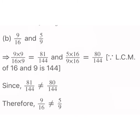The common denominator for both fractions is 144. We multiply 9 upon 16 by 9 to get 81 upon 144. We multiply 5 upon 9 by 16 to get 80 upon 144. Since 81 upon 144 is not equal to 80 upon 144, the fractions 9 upon 16 and 5 upon 9 are not equivalent fractions.